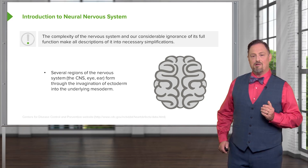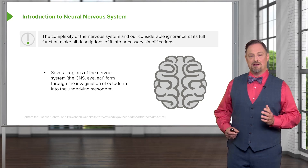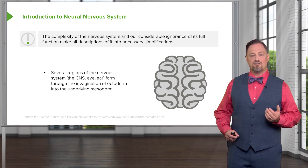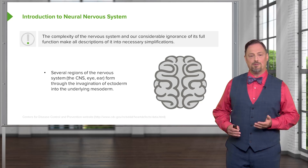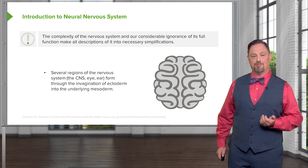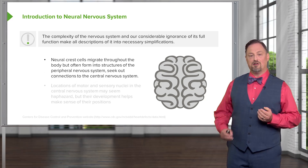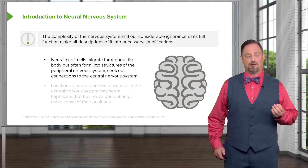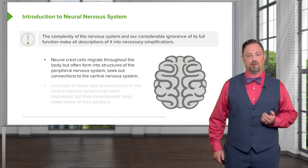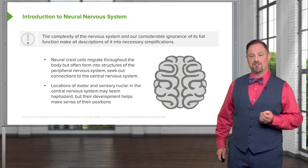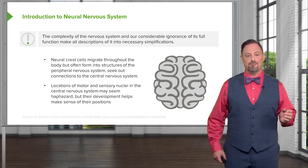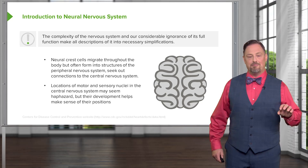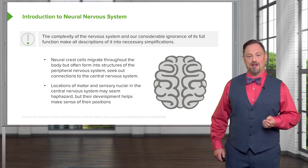Even though there's a lot of complexity in formation of the brain, some similarities occur in a lot of different areas. Most of the central nervous system and its associated structures like the eye and the ear form from an invagination of ectoderm that moves into the mesoderm underneath it. Neural crest cells also migrate into the mesoderm but then migrate throughout the entire body to form structures including most of the ganglia of the peripheral nervous system, and they connect back to the CNS where motor and sensory activity is modulated by nuclei within the brain and brain stem.